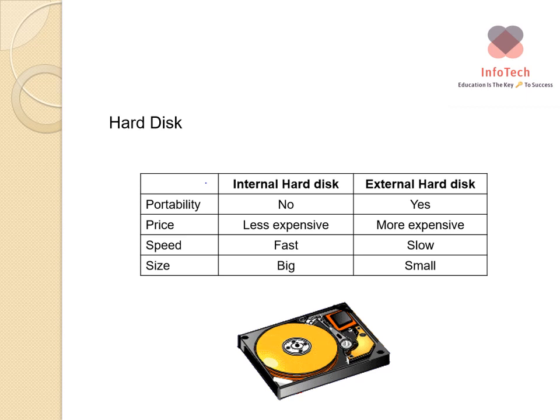Let us compare internal and external hard disks. Regarding portability, the internal hard disk is not portable since it's inside the computer, while the external hard disk is accessible via USB port. Regarding price, the internal hard disk is less expensive, while the external hard disk is more expensive. For speed, the internal hard disk is faster because it's within the computer system, while the external hard disk is slower due to factors affecting data transfer time. Regarding size, the internal hard disk is larger and the external is a smaller device.